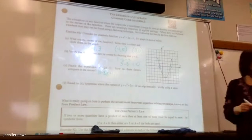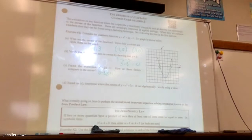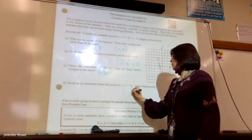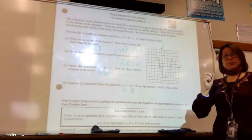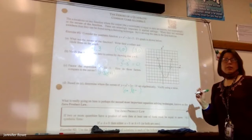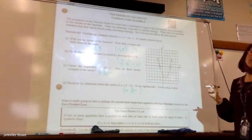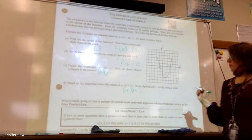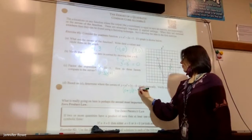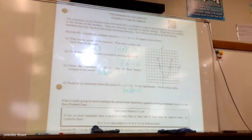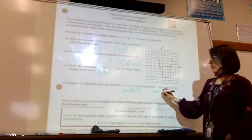Based on part c, determine where the zeros of y equals x squared plus 3x minus 10 are algebraically. Verify using a table. They switched our equation on us, so they want us to unfoil it. Give me my signs. Plus and minus. What do I need? Factors of 10 that subtract to give me three. Five and two. So what does that tell me about the zeros? The zeros should be negative five and positive two.